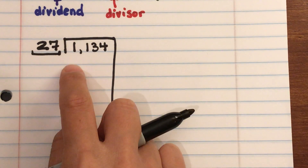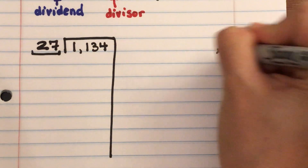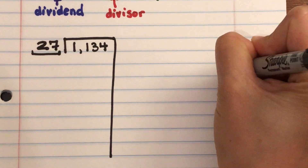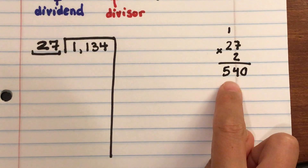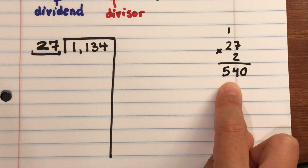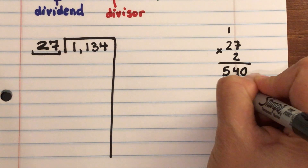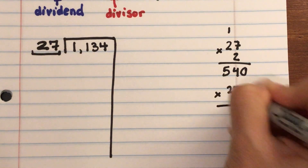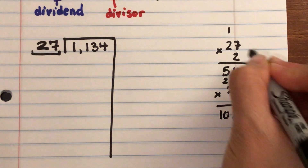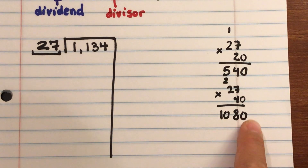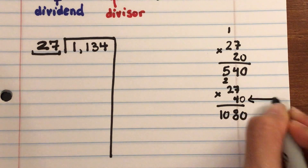Instead of 10, let's try 20. Off to the side: 27 × 20 = 540 — still too small. Let's try 27 × 40: 27 × 4 = 108, so 27 × 40 = 1,080. That will fit into 1,134, so I'm going to use 40 as my first partial quotient.